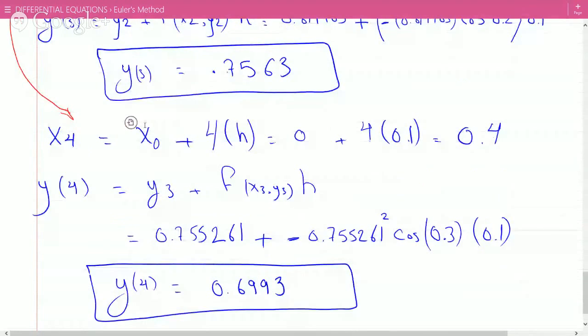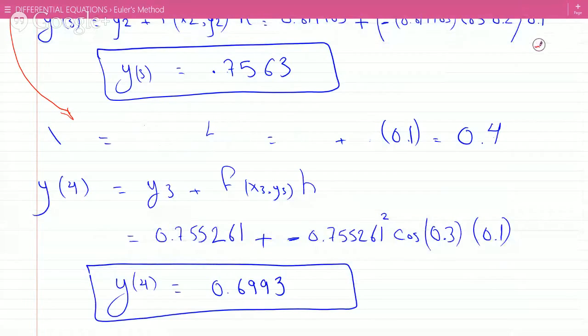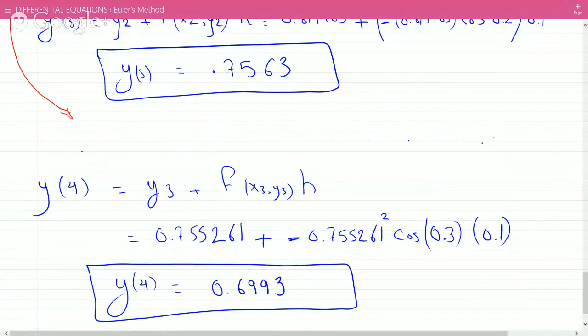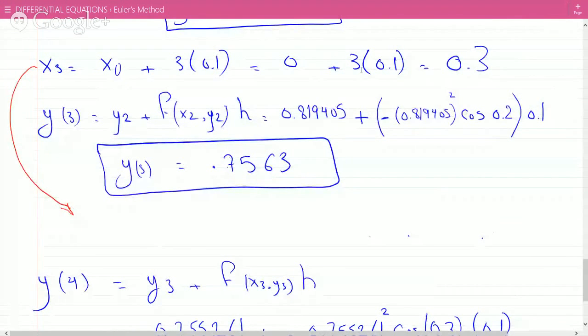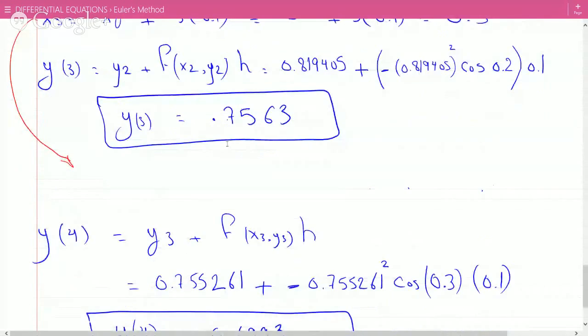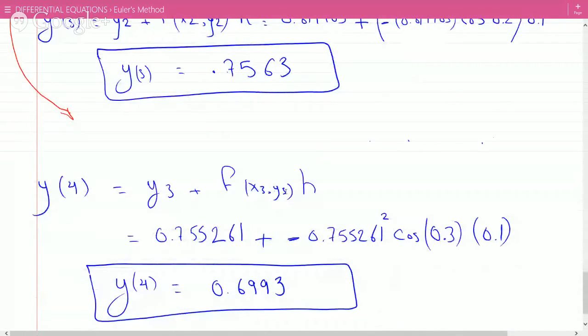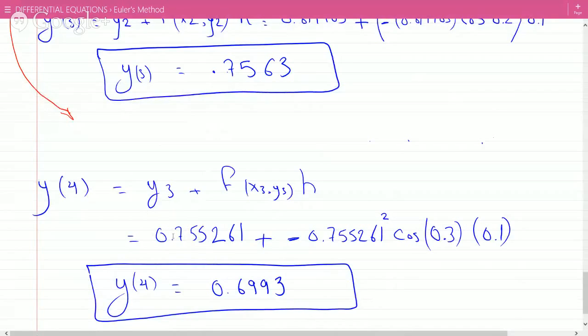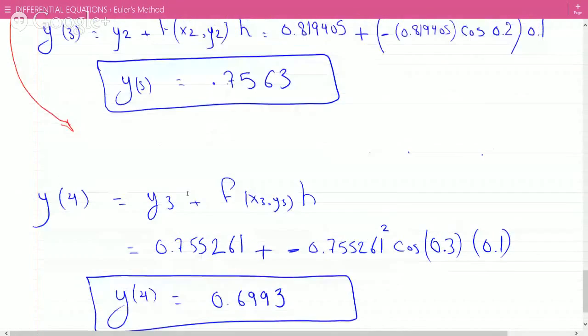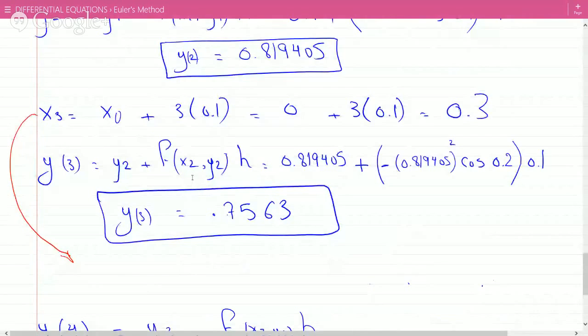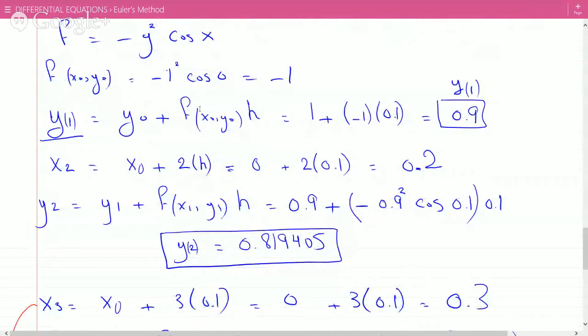Student asks: How did you get y1 = 0.9? Instructor: The final step is y4 = y3 + f(x3, y3)h. y3 is what we got here, plus x3 = 0.3 and y3 = 0.7563 plugged into -y² cos(x), times h added to the previous y, gives y4 = 0.6993.